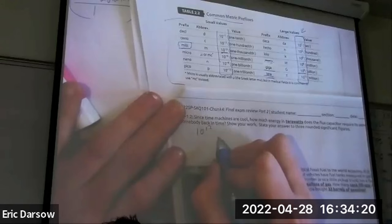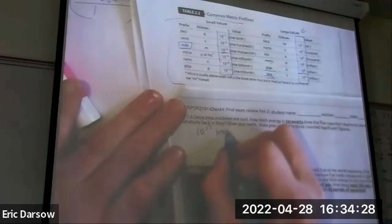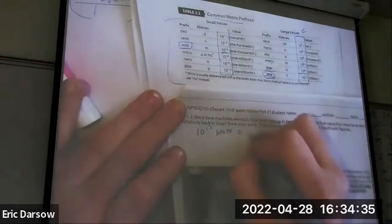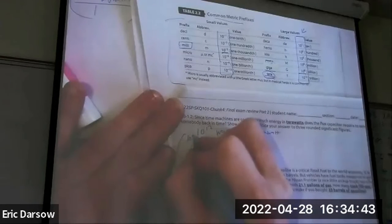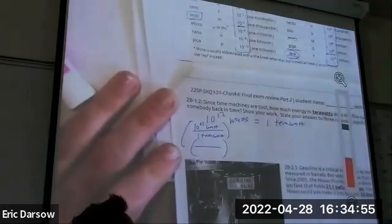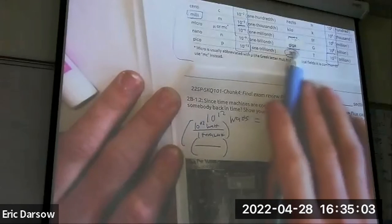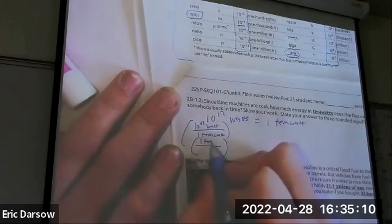Base units - yeah, watts. This value in base units, so 10 to the 12th watts is the same as one prefixed unit. Yep, one terawatt. I could also write this as 10 to the 12th watts over one terawatt, or one terawatt is the same as 10 to the 12th watts.